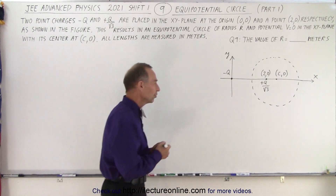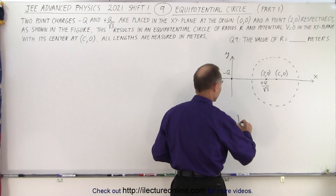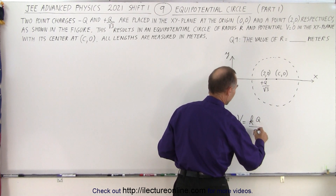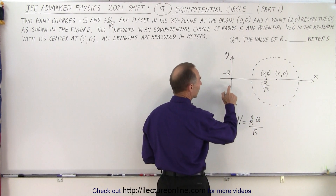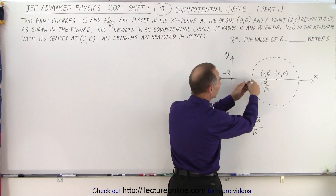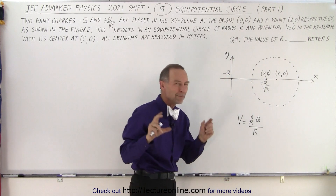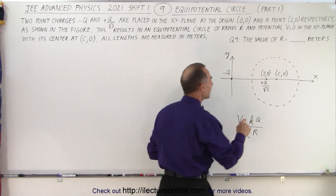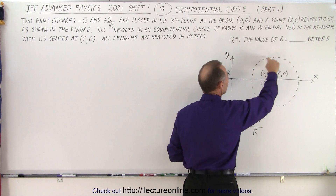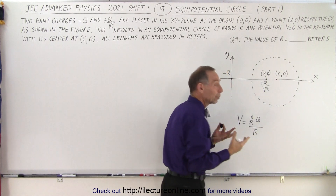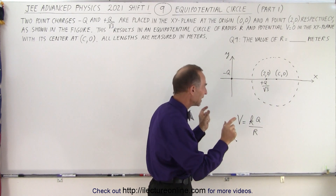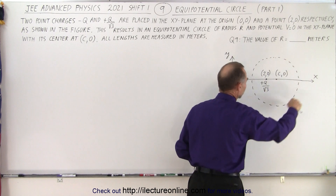We'll use the principle that the potential is equal to K times Q divided by R. We're going to have a negative potential due to one charge and a positive potential due to the other, and when we add them together they should equal 0. So the magnitudes of the potential created by each charge anywhere along the circle should be equal — they should cancel each other out. The magnitude of the two potentials should equal one another all the way along the circle.